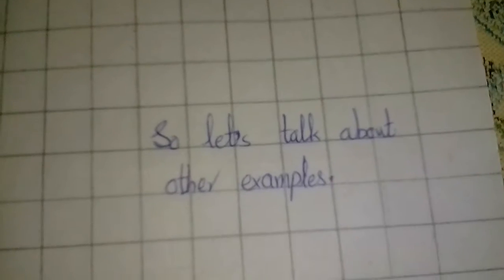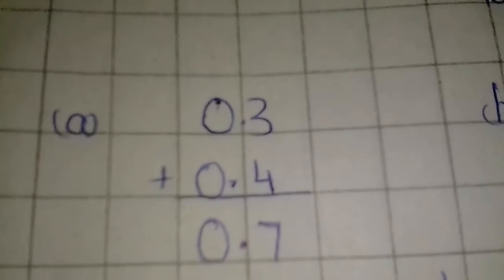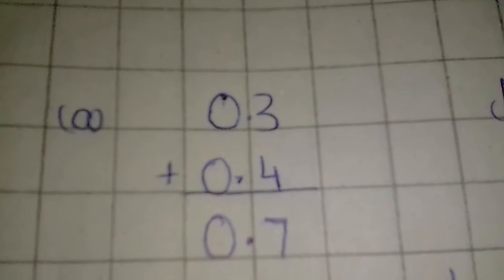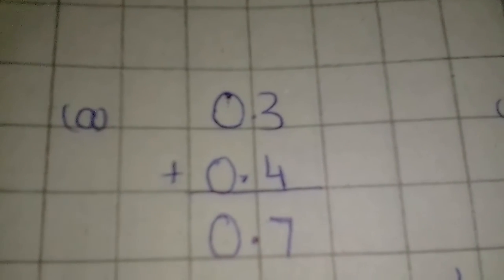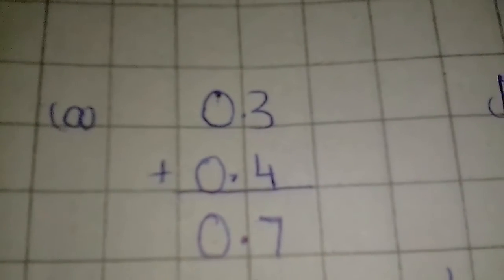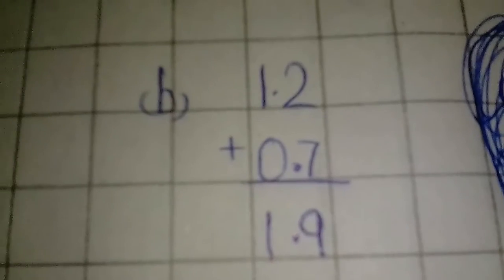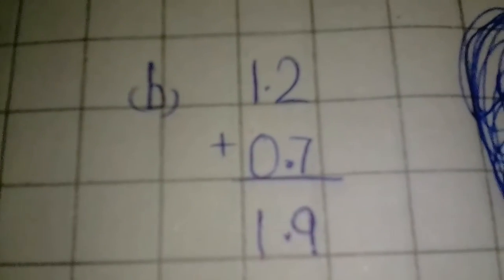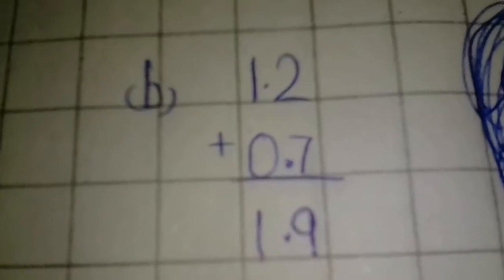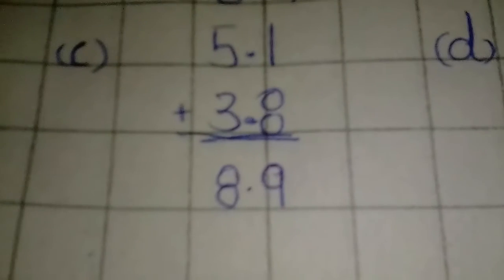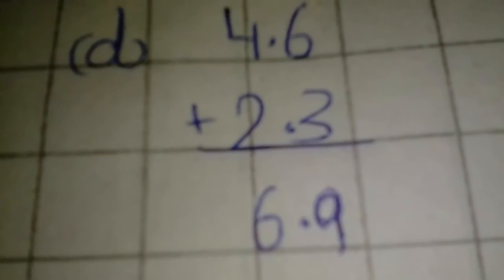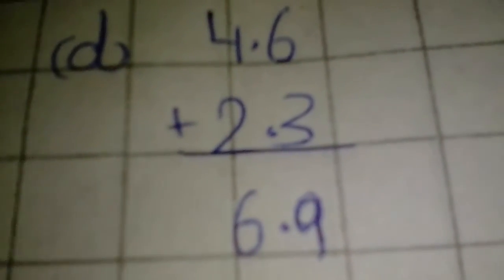So let's talk about other examples. 0.3 plus 0.4 is equal to 0.7. 1.2 plus 0.7 is equal to 1.9. 5.1 plus 3.8 is equal to 8.9. 4.6 plus 2.3 is equal to 6.9.